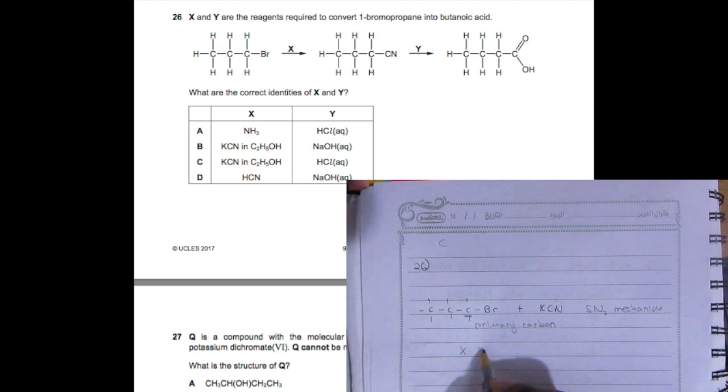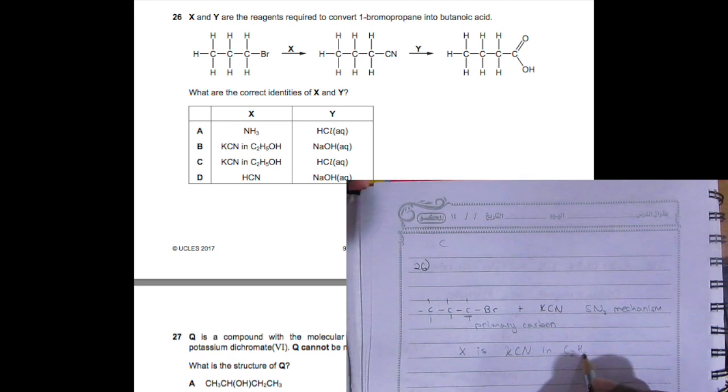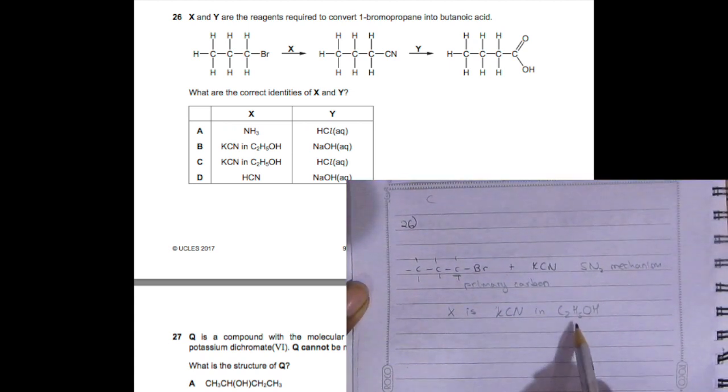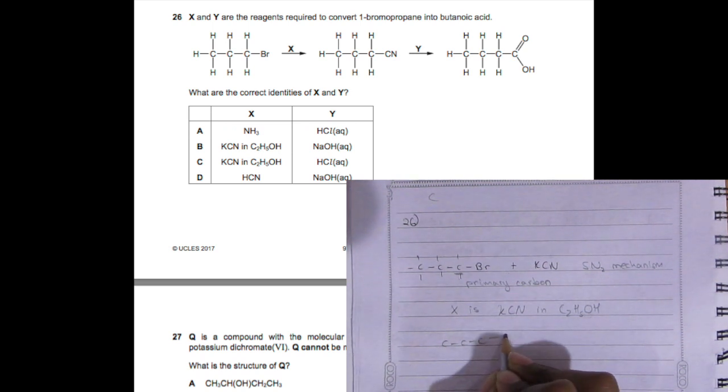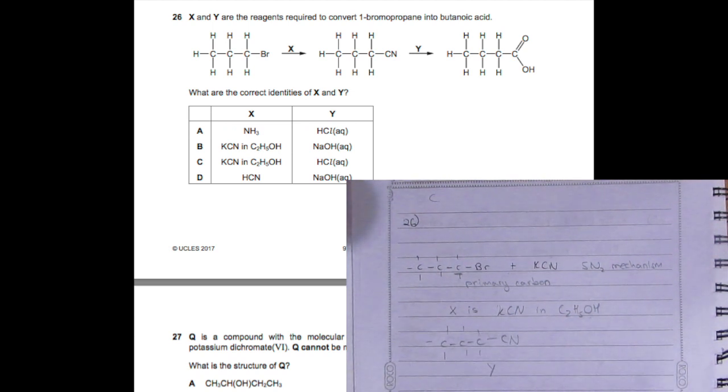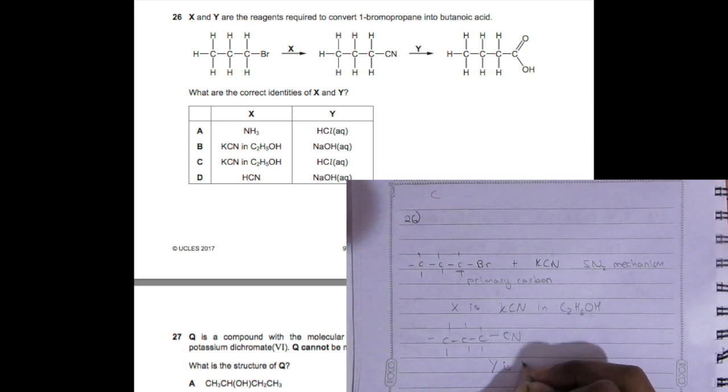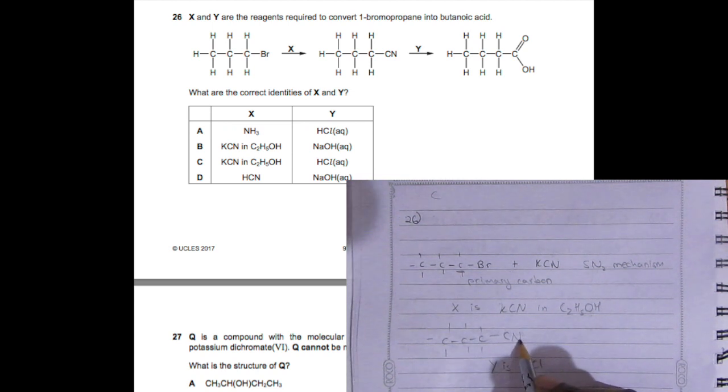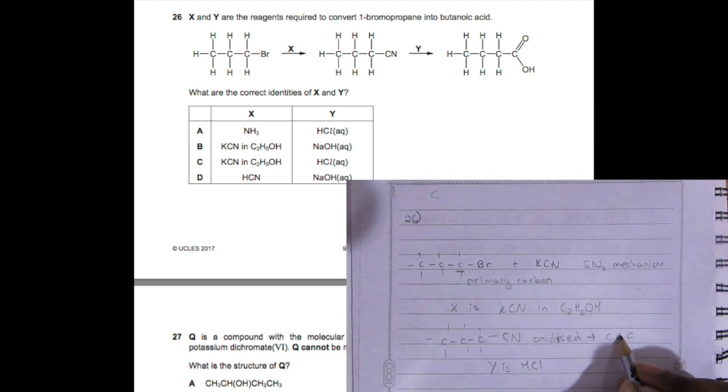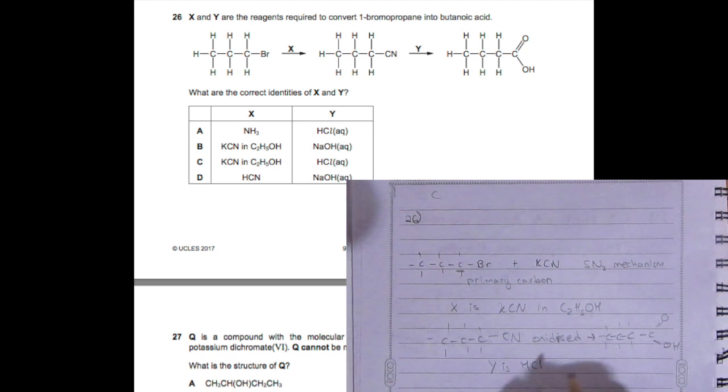X is KCN in C2H5OH, which is basically ethanol - substitution with cyanide ions in ethanol. So that will give us C-C-C-C-C-C-CN and the H's. Now we need to know what Y is. Y is HCl because here we are oxidizing it - oxidized, oxidized, oxidized - to give us C-C-C-C a carboxylic acid. So then the answer would be C.